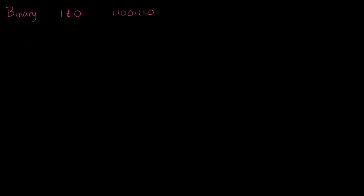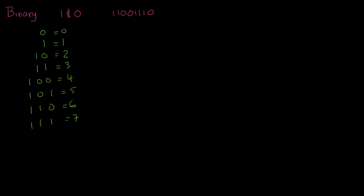The first binary number I want to show you is 1. A binary value of 1 is equal to 1, and a binary value of 0 is equal to 0. The number 2 can be represented as 1 0, and 3 would be two 1s. 4 would be 1 0 0, and 5 would be 1 0 1. 6 would be 1 1 0, 7 would be 1 1 1, and 8 would be 1 0 0 0.